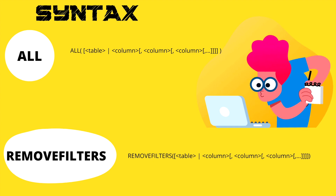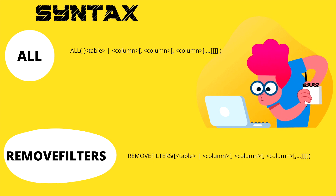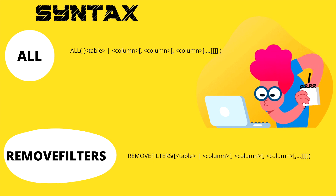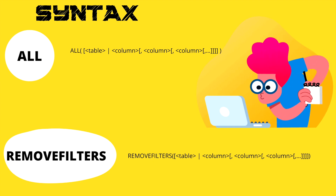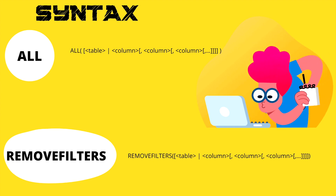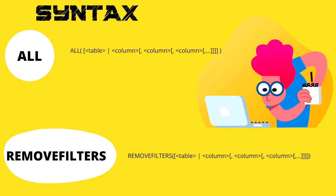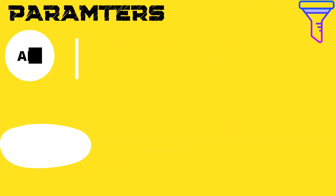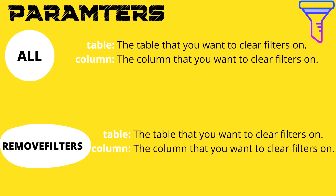Now let's discuss the syntax of these two filter functions. As you can see on my screen, for both functions the syntax is the same except the name of the function. For ALL, it starts with ALL, then your table name or column name, and then other columns correspondingly. For REMOVEFILTERS, you write REMOVEFILTERS first, then your table name or column, and so on.